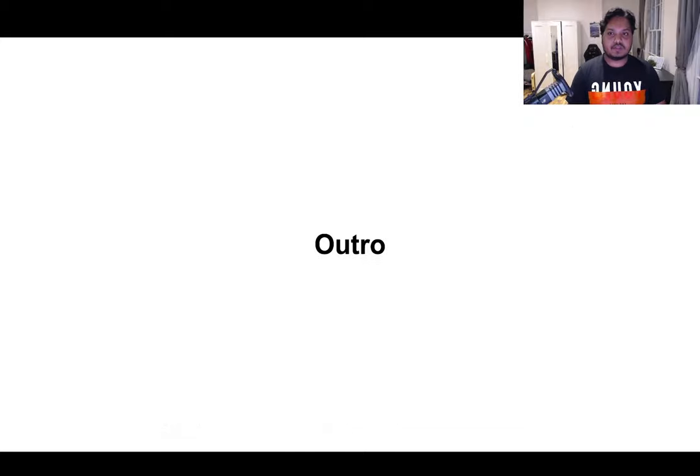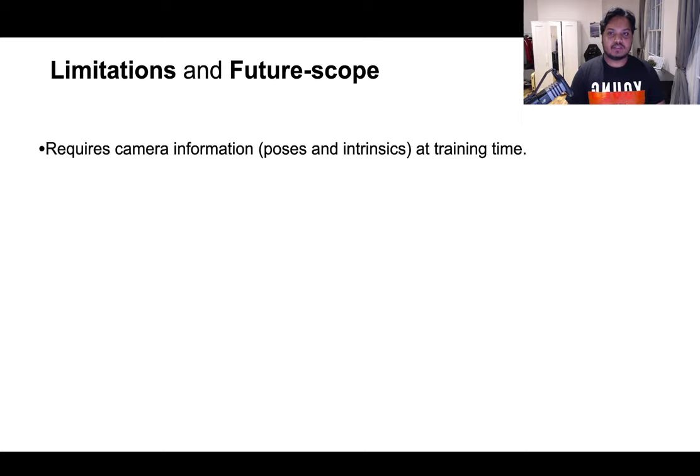Finally, we cover some of the limitations and the future scope of our method. Firstly, HoloDiffusion needs the poses of the images at training time. This either requires expensive hardware calibration or running the structure from motion as a data processing step.